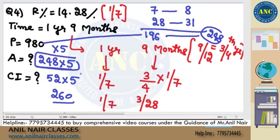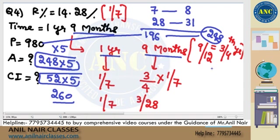Once you understand the idea, the logic becomes very simple. We avoid formula usage and solve everything through conceptual clarity. We split 1 year 9 months into 1 year and 9 months. 9 months is 3/4 of a year. Rate for full year is 1/7, so for 3/4 year it is 3/28. On 7 there is 1 increase giving 8; on 28 there is 3 increase giving 31. 7 × 28 = 196, 31 × 8 = 248. Since 196 × 5 = 980, the multiplier is 5. Amount = 248 × 5, CI = 52 × 5.